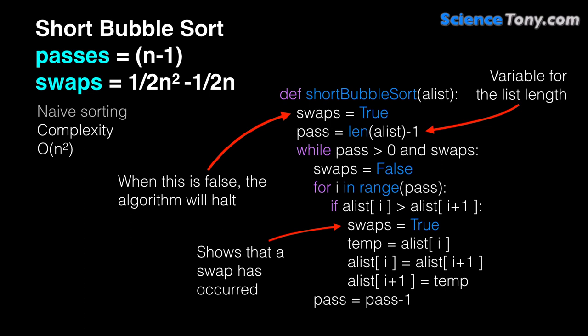Let's have a look at the code. Short bubble sort has passes N-1, which is the same as regular bubble sort. The swaps, in the worst case scenario, are going to be the same, because it will have to run all the way through the list, making N-1 swaps as it goes. It's still naive sorting, and its complexity is still O(N squared).